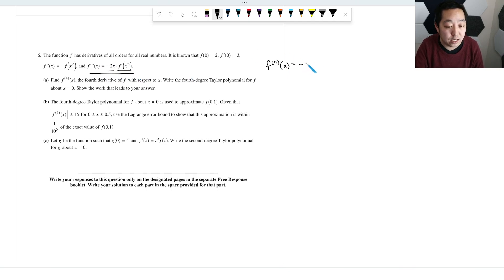This will be negative 2, derivative of the negative 2x times f'(x²), plus the negative 2x times the derivative of this guy, which is going to be f''(x²). Then by chain rule though, the inside here, I'm going to multiply by 2x. So that is going to be -2f'(x²) - 4x²f''(x²).